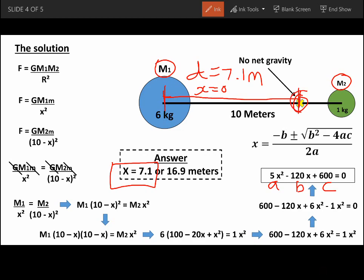So if we place this particle here, 7.1 meters away from this mass here, we end up with our answer.